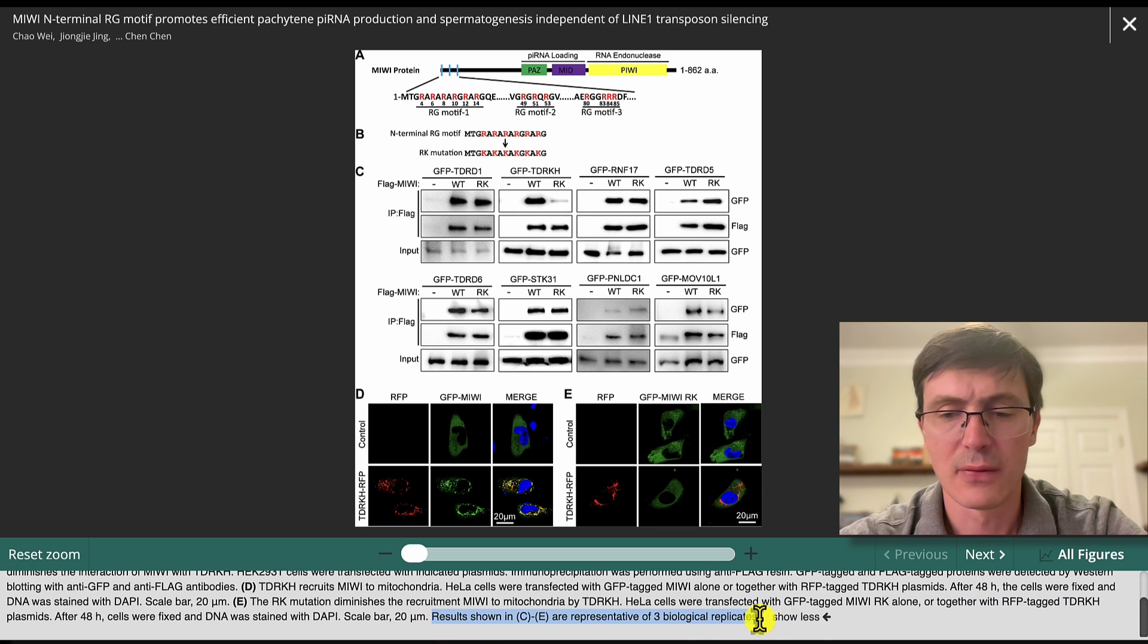The final part is these final lines at the end, where you tend to summarize concepts that are valid for more than one panel. So here they write results shown in C and E are representative of three biological replicates. And usually this is related to the statistics.